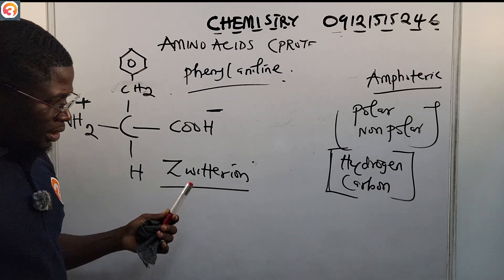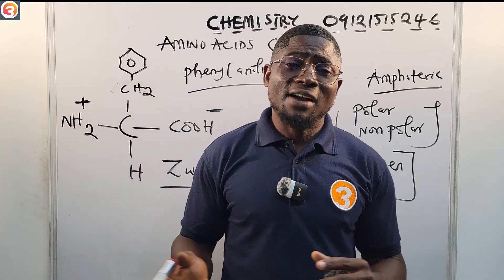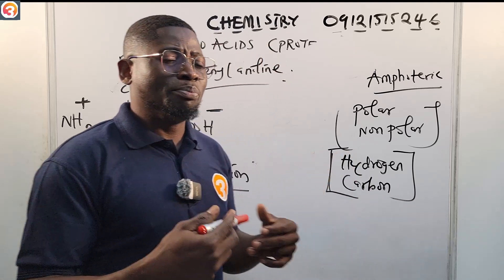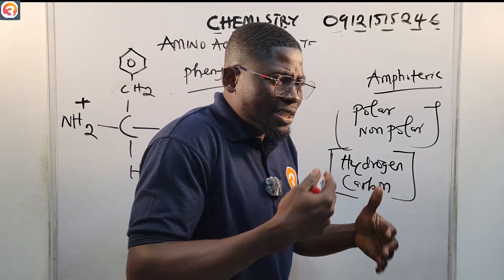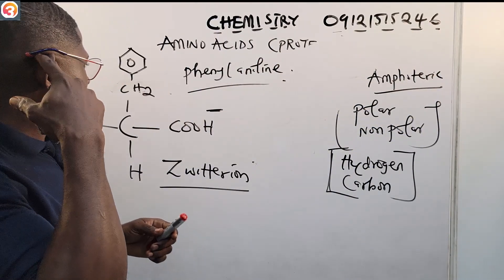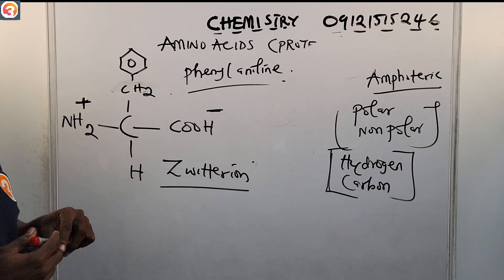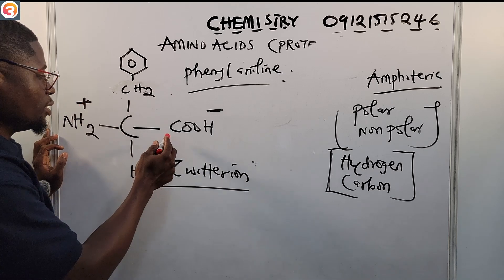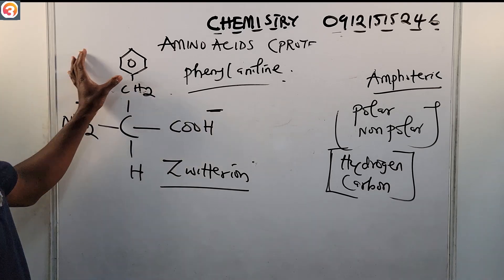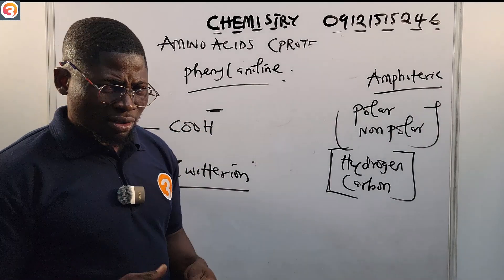Those examples help us understand the different types of amino acids and how they are classified based on their R groups. Also note that this central carbon is a chiral carbon — it is bonded to four different groups: COOH, R, NH2, and H.